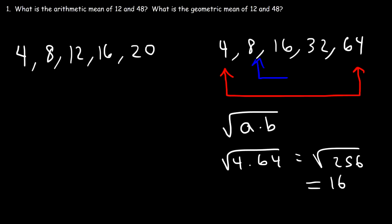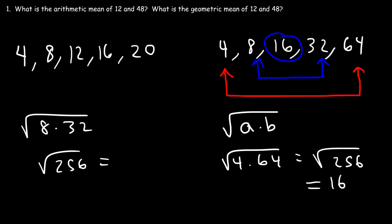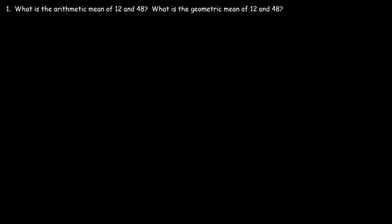We can also calculate the geometric mean of 8 and 32: the square root of 8 times 32 is the square root of 256, which is again 16 — the middle number of that geometric sequence. So the arithmetic mean is the middle number in an arithmetic sequence, and the geometric mean is the middle number in a geometric sequence.